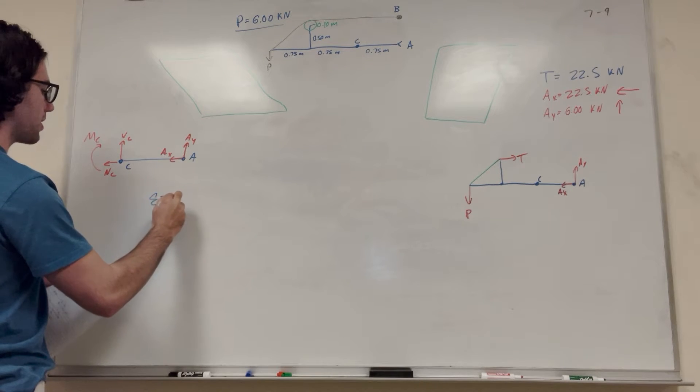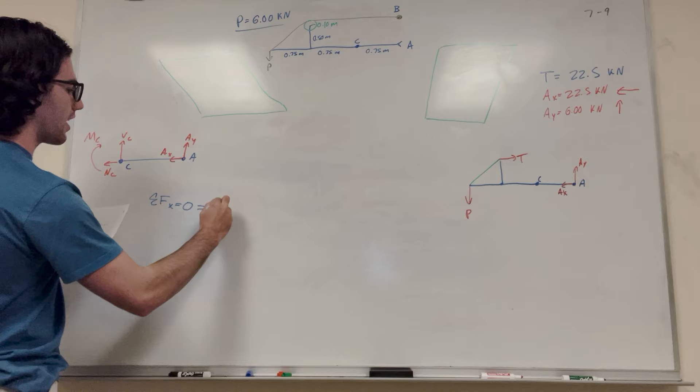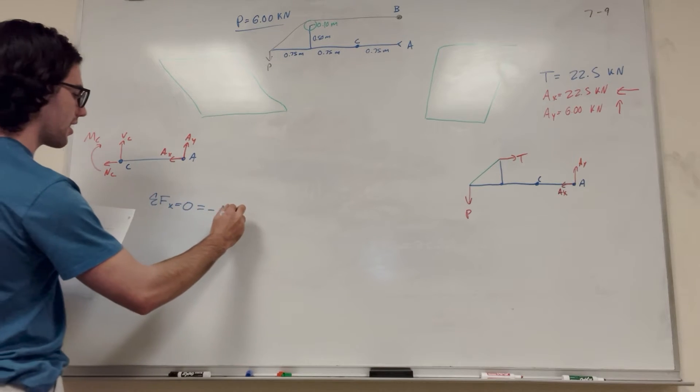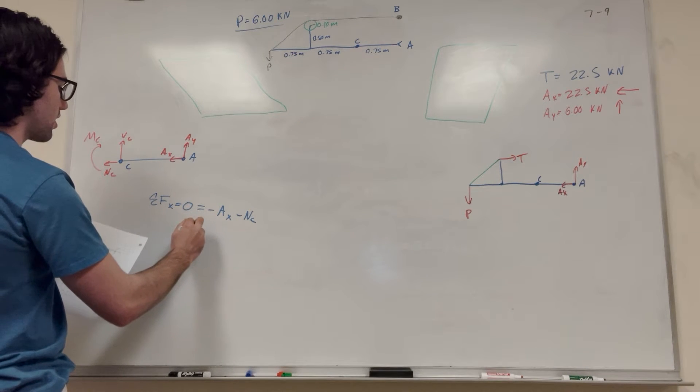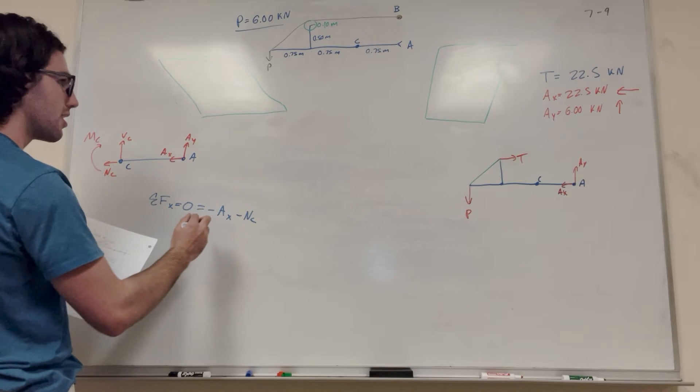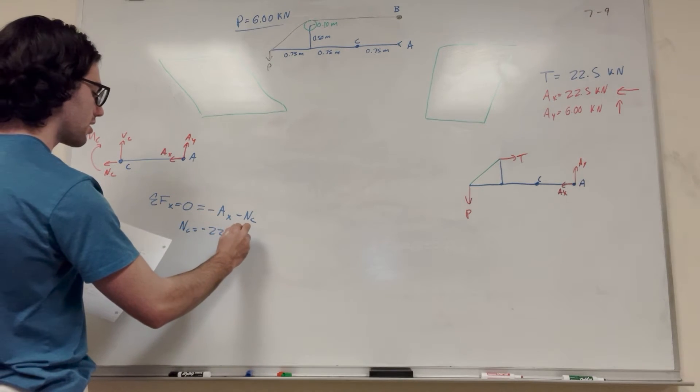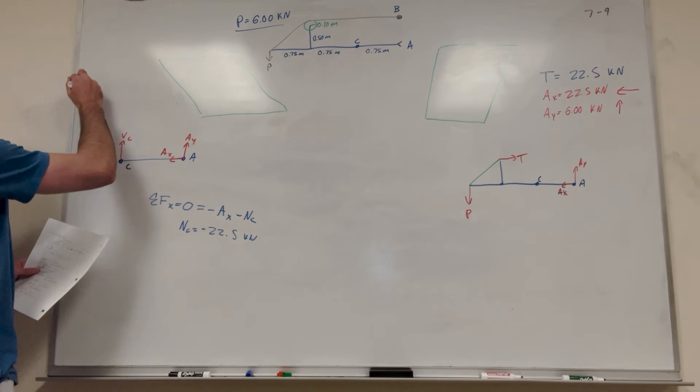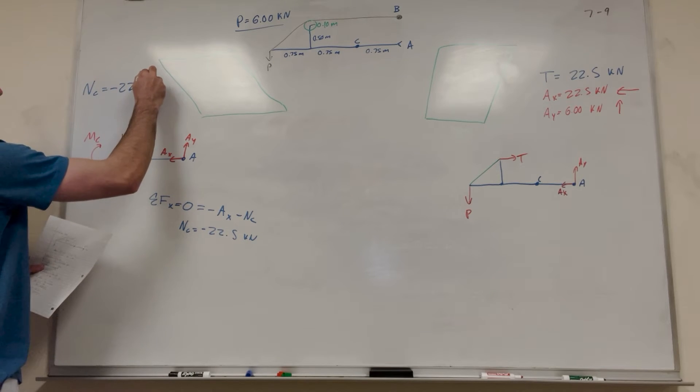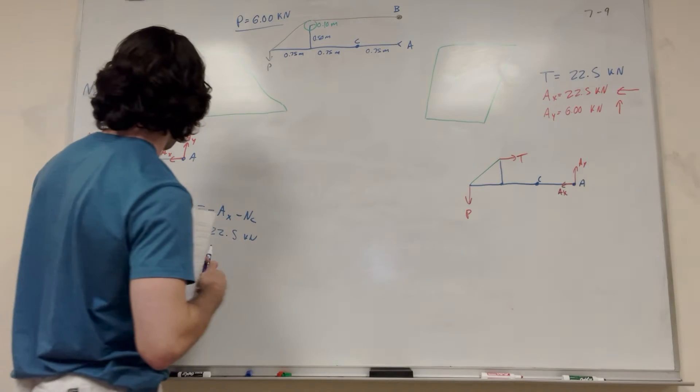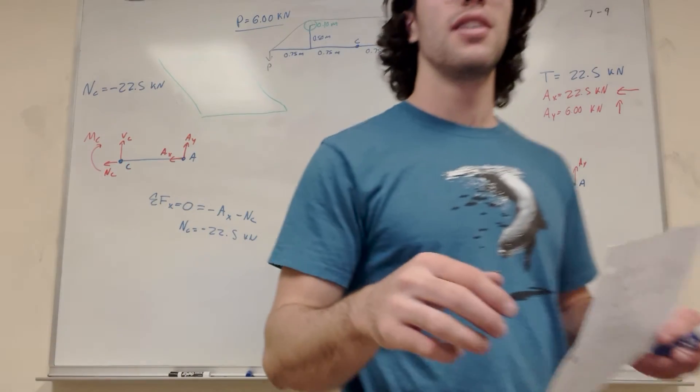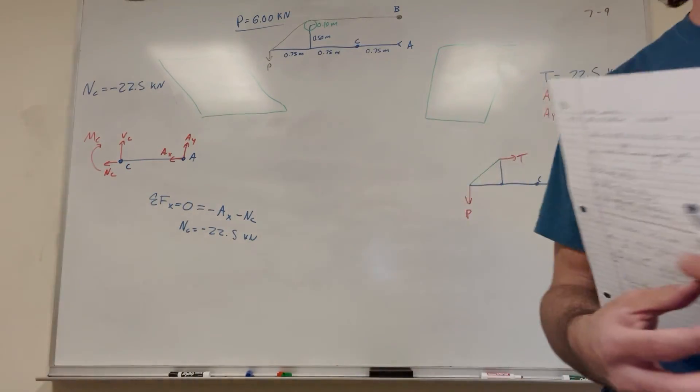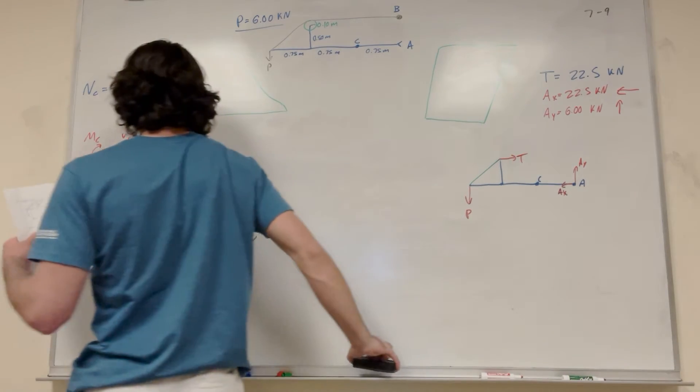So sum of the forces in the X, we know it's going to be equal to 0. So then it's going to be minus A_x minus N_c. So then of course you move N_c over. And it's going to be minus A_x, which is 22.5. So then you find N_c. So there we go. Normal at C is negative 22.5. Basically that's just saying it's pushing to the left. Or it's pushing to the right. Let's see. Let's find out what I put. Yep. Gotcha. So that's the answer.